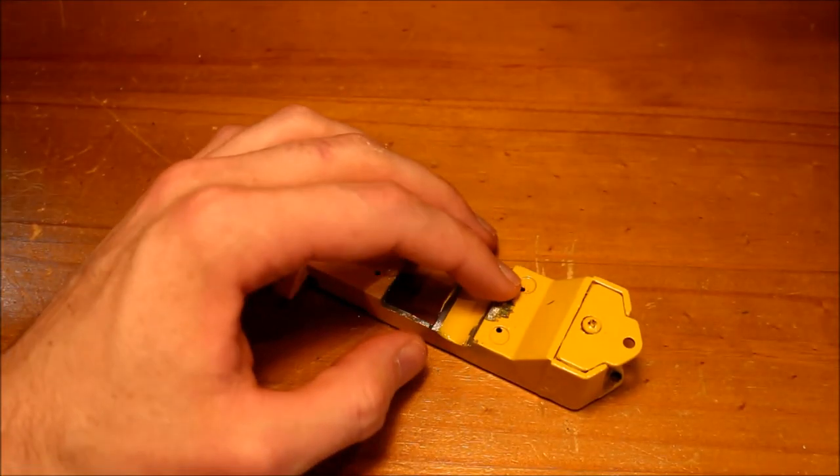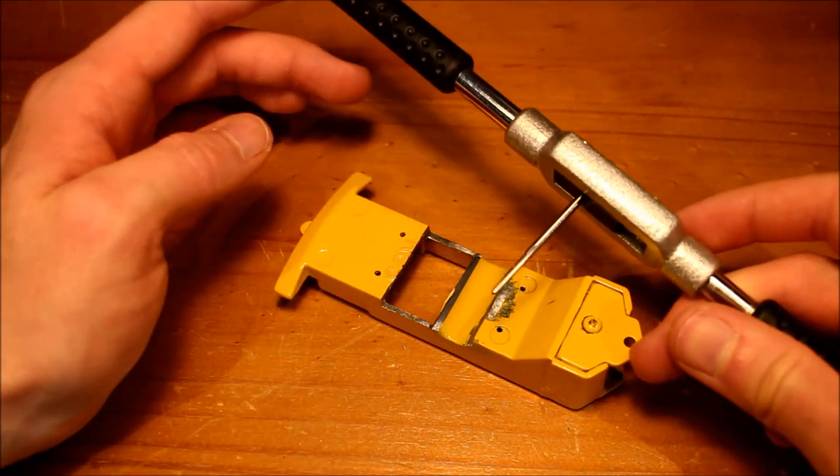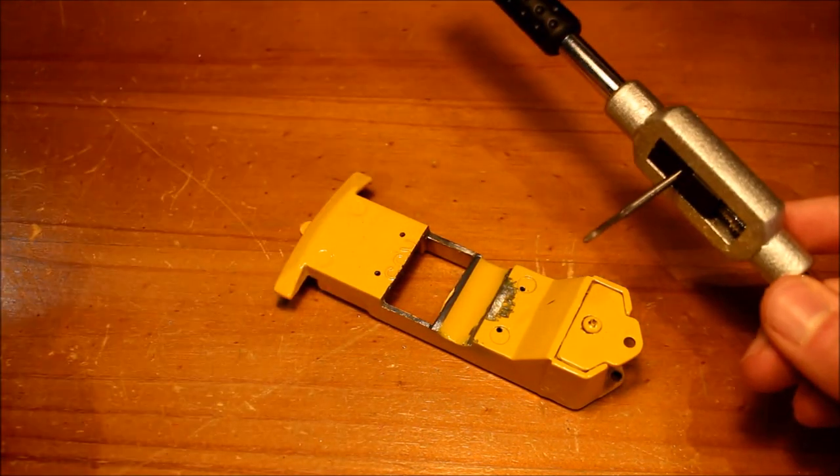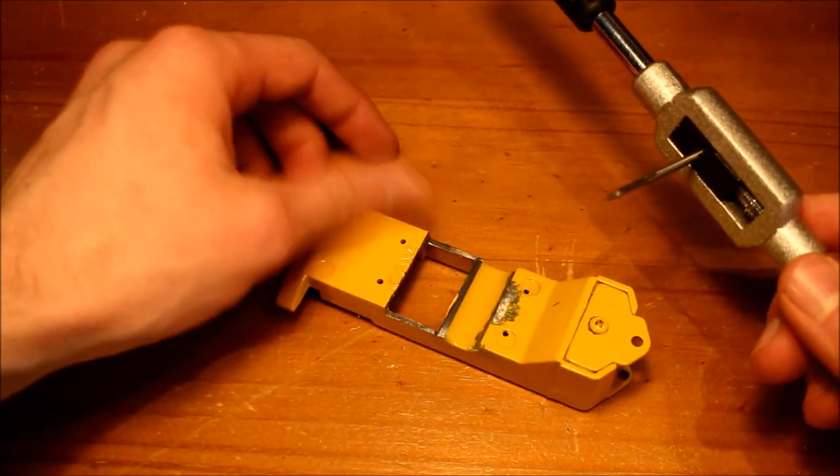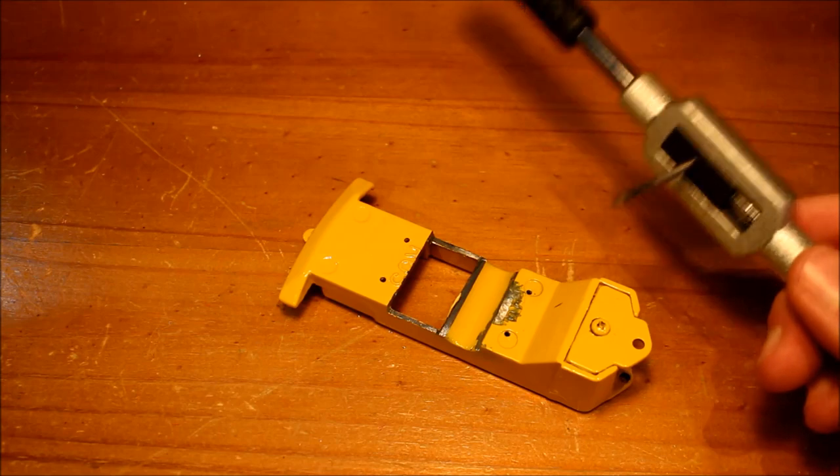OK I've drilled the holes to 1.6mm. So next thing to do is to tap the holes. This is a little tricky to do around the camera as most things are. So I'm just going to tap them and we'll just skip ahead to after they're tapped.